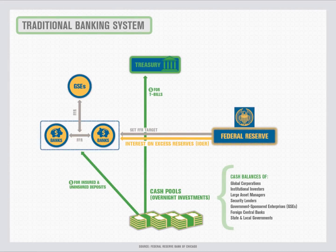To better implement monetary policy in this new environment, the Fed began paying interest on excess reserves, or IOER, to depository institutions in October 2008. But as previously mentioned, some institutions such as the GSEs are not eligible to earn IOER. Paying IOER influences the equilibrium federal funds rate by setting a floor on the rate at which depository institutions are willing to lend in the federal funds market.